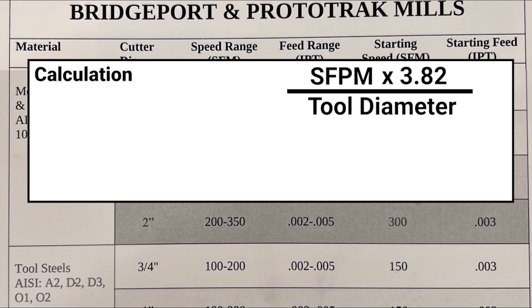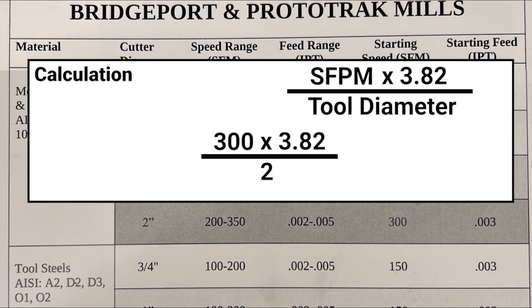Next, we multiply 300 times 3.82 and divide by 2, since our tool diameter is 2 inches. Our calculated RPM is 573.